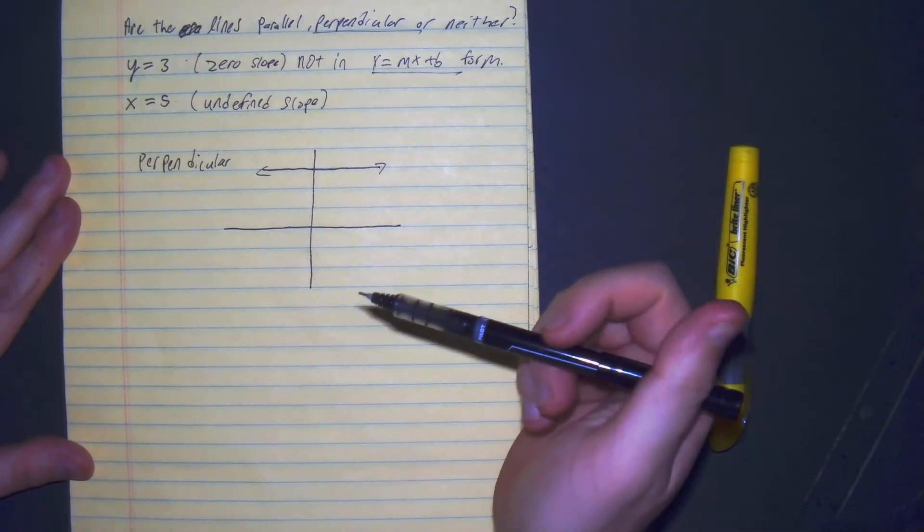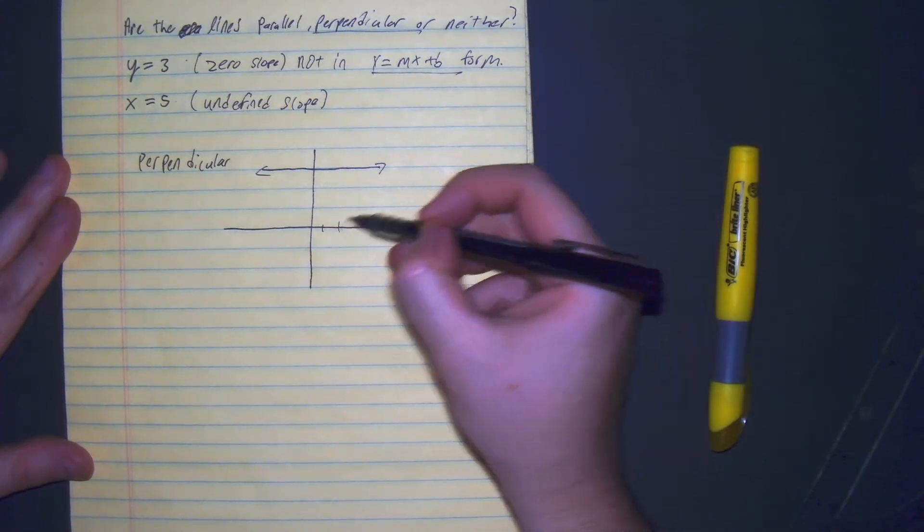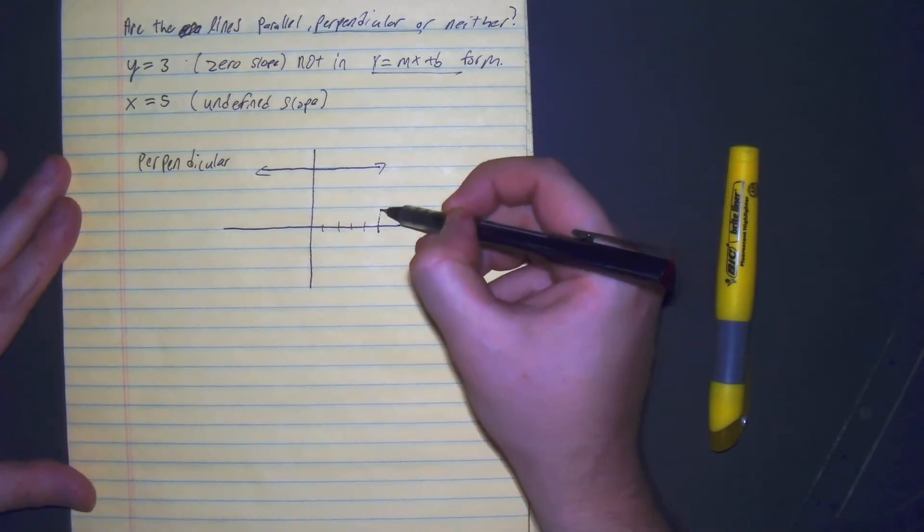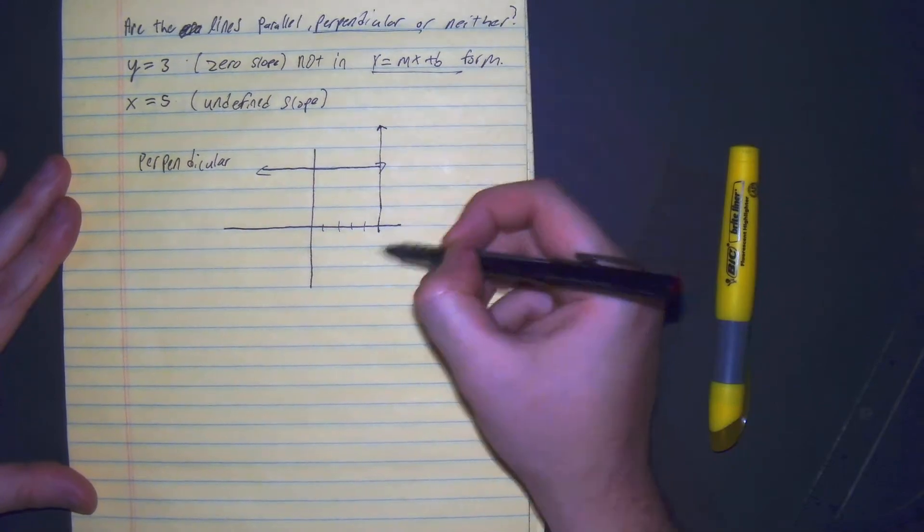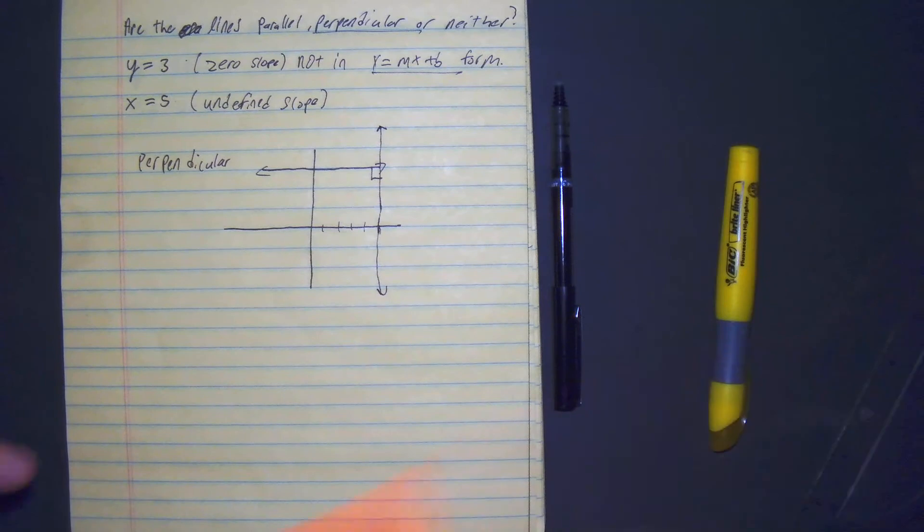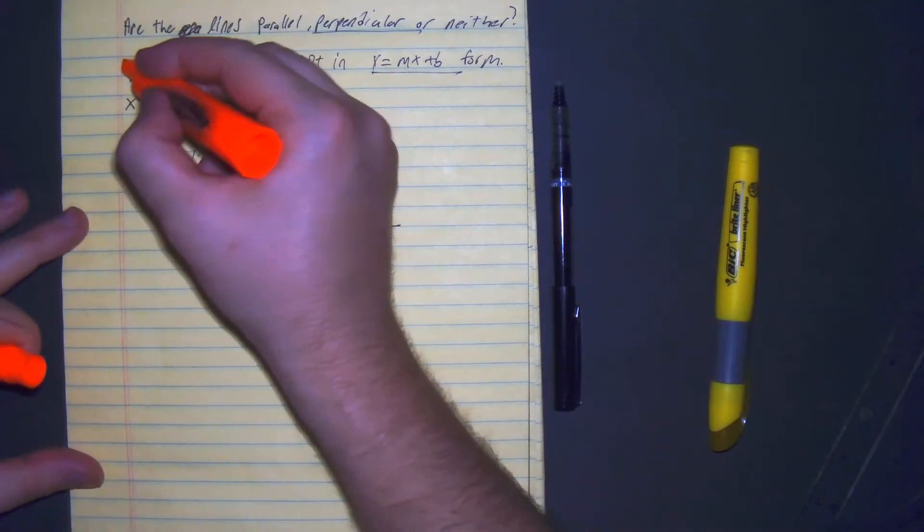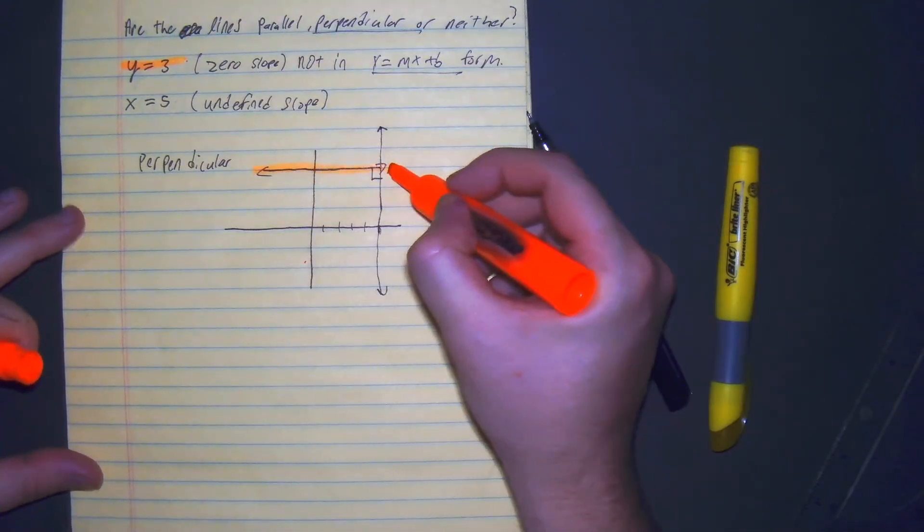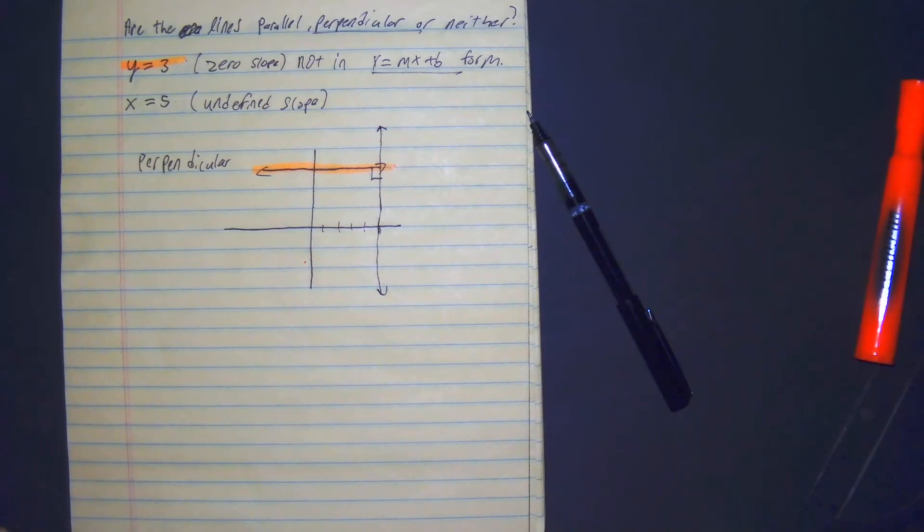And then we have x equals 5, which all x's are equal to 5 - 1, 2, 3, 4, 5. So when they connect, they create a right angle. So right here, y equals 3, and x equals 5.